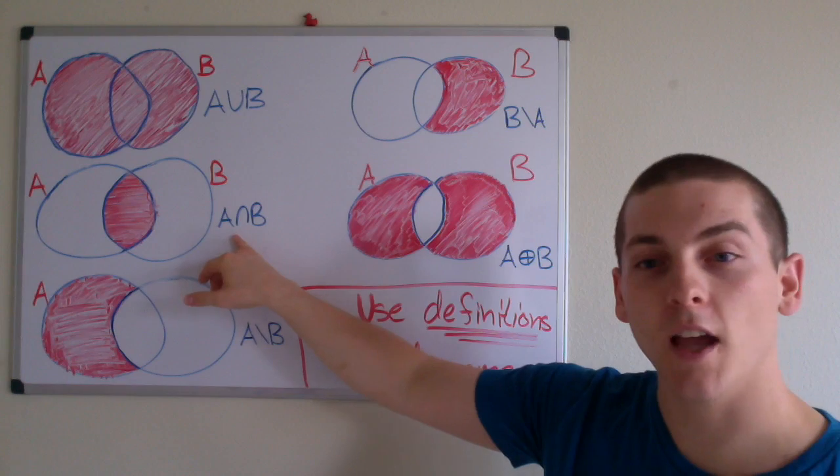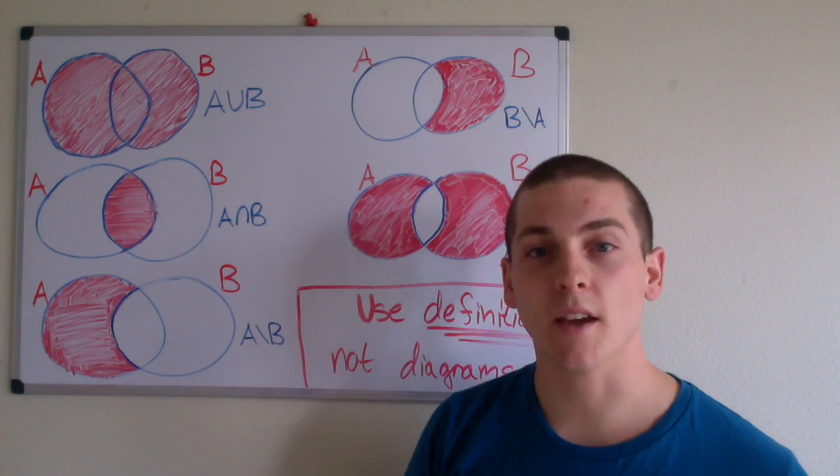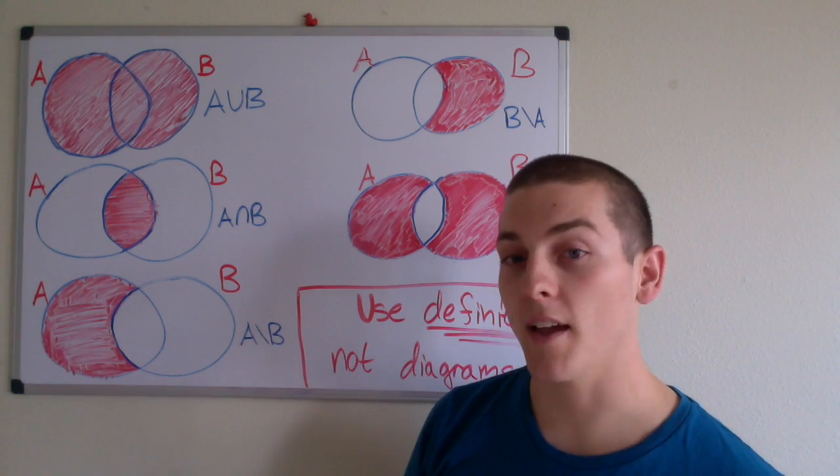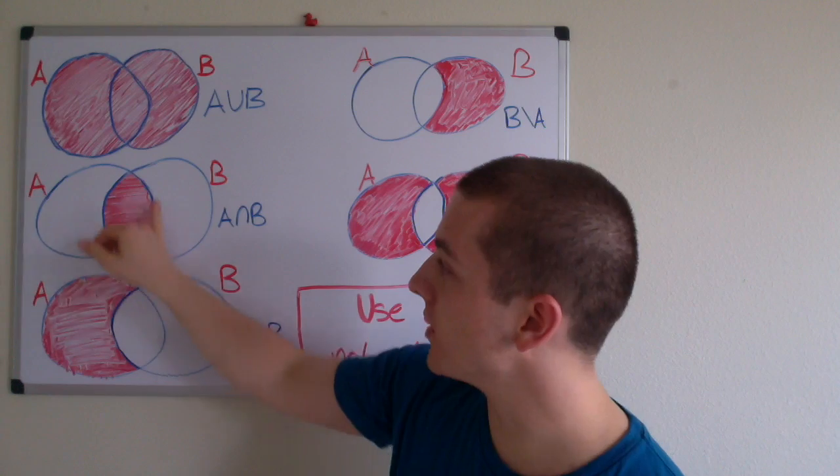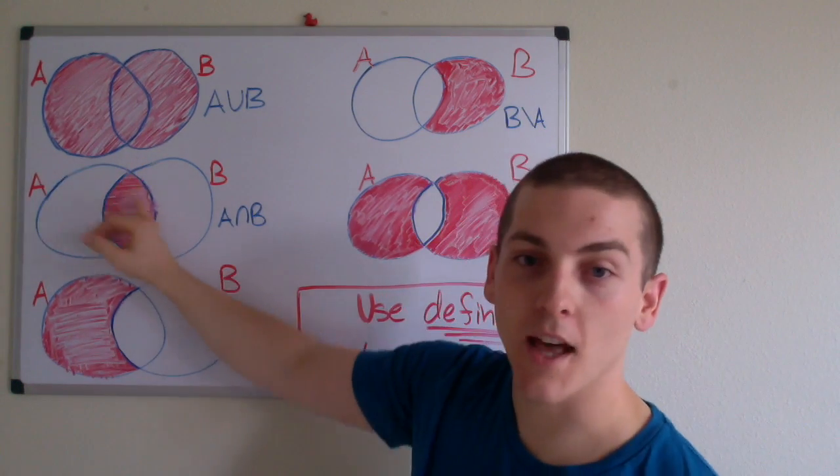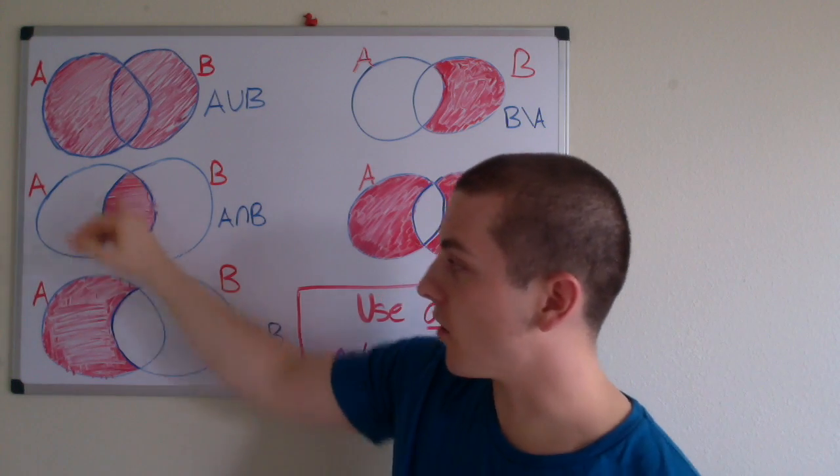The definition of A intersection B equals the set containing elements x such that x is an element of A and x is an element of B, which is why the overlap where A and B overlap is shaded red. All possible values of x are this red region.